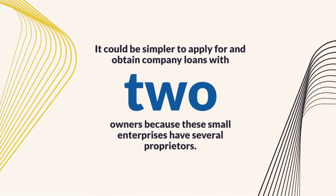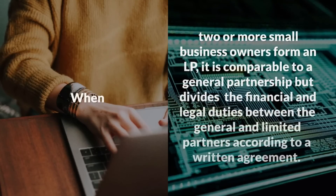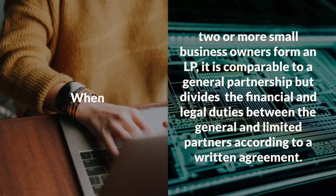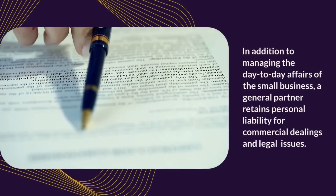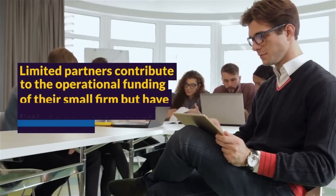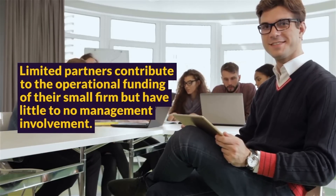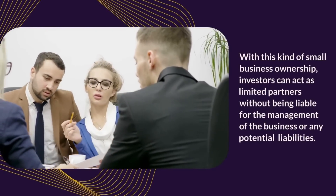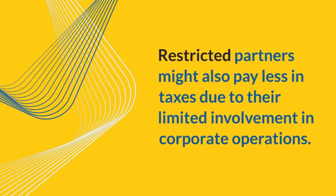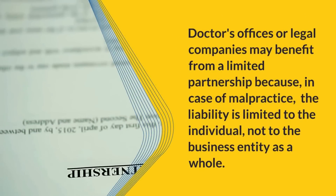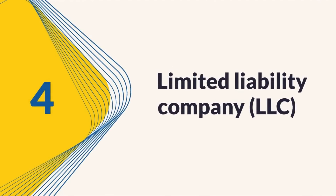It could be simpler to apply for and obtain company loans with two owners because these small enterprises have several proprietors. 3. Limited Partnership. An LP is comparable to a general partnership but divides the financial and legal duties between the general and limited partners. A general partner manages daily affairs and retains personal liability for commercial dealings and legal issues. Limited partners contribute to the operational funding of their small firm but have little to no management involvement. In an LP, investors can act as limited partners without being liable for the management of the business or any potential liabilities. Restricted partners might also pay less in taxes due to their limited involvement. Doctors' offices or legal companies may benefit from a limited partnership because the liability is limited to the individual, not to the business as a whole.